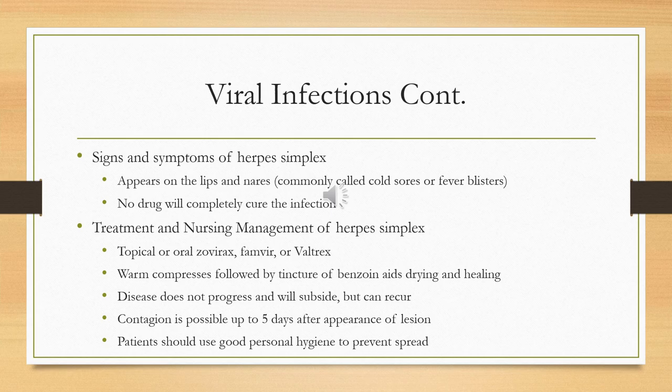Primary symptoms include malaise and fever. You might see vesicles or lesions on the lips or nares for type one — sometimes called a cold sore or fever blister. Secondary symptoms may include a tingling or burning sensation prior to the outbreak of vesicles on the mucosal area.